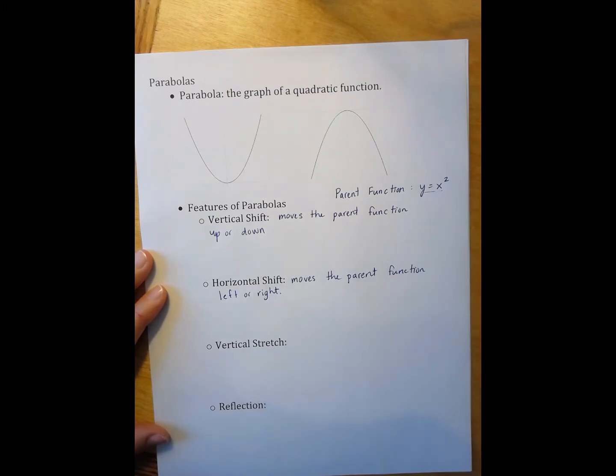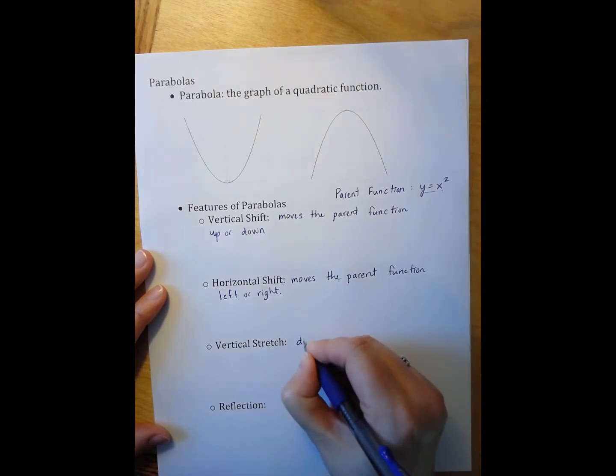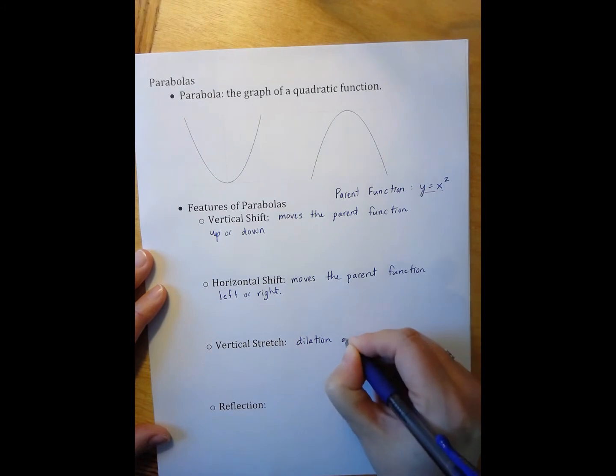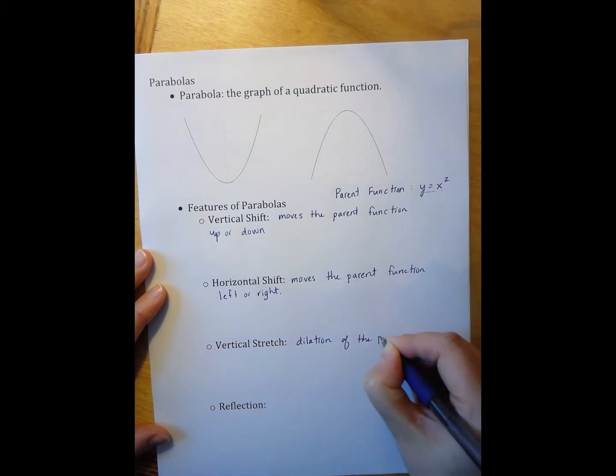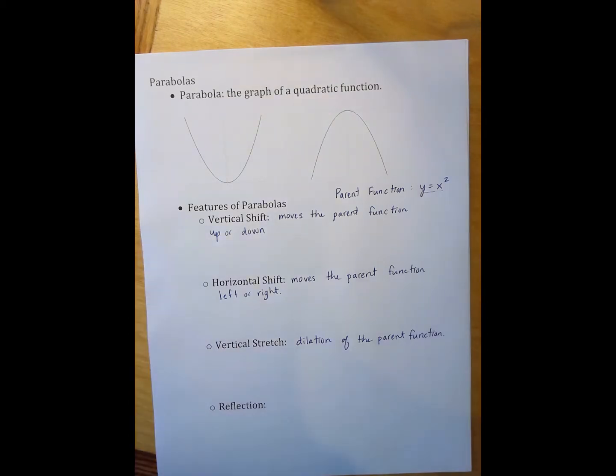A vertical stretch happens when I have a dilation of the parent function. A vertical stretch does actually change sort of the shape of the function of the parabola by either making it look more narrow or wider. It doesn't change the fact that the parabola is still a U shape. It simply changes how wide or narrow the U is.